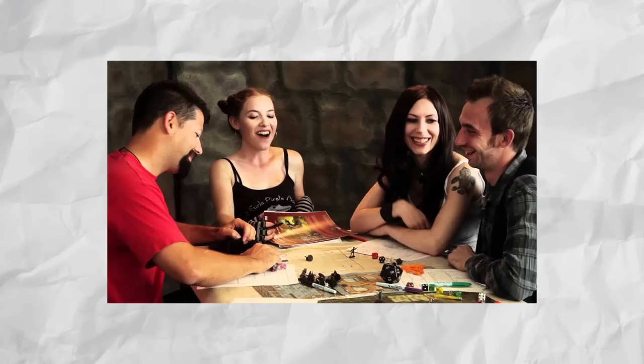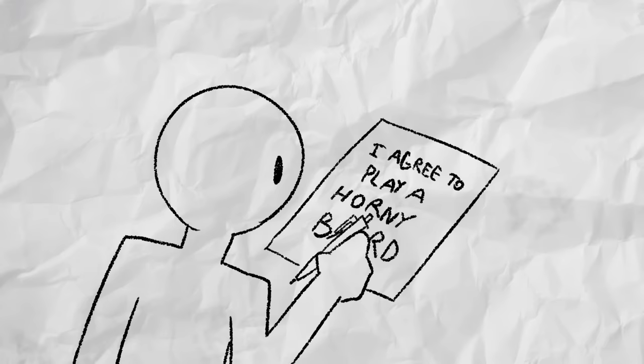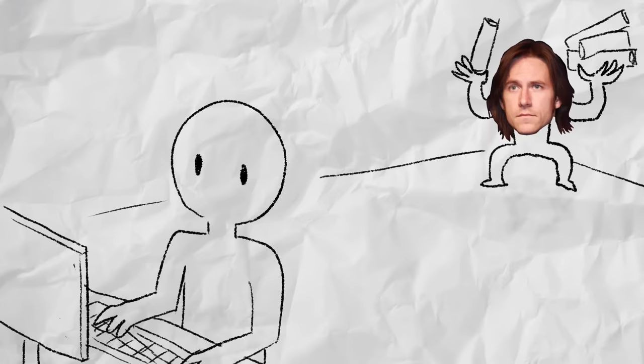By playing D&D, you automatically sign an unwritten contract that forces you to write your character to fall under the purest stereotype of whatever class you pick. Everybody knows you have to follow that contract, or else Matt Mercer will sneak into your house and throw foam noodles at you from the corner of your living room.